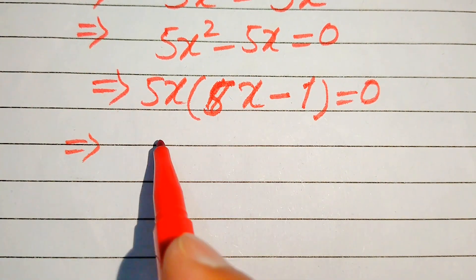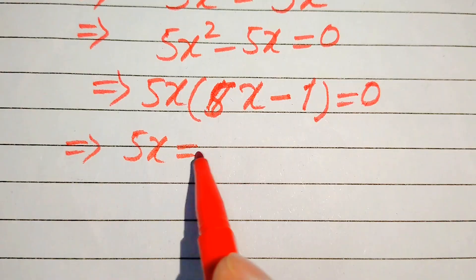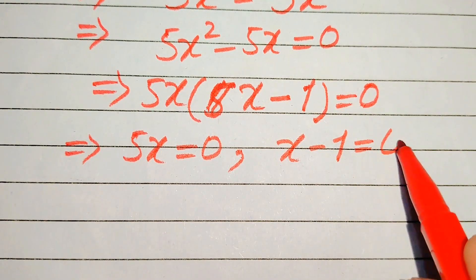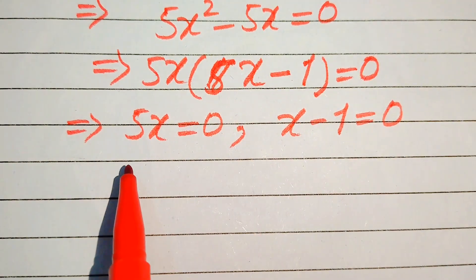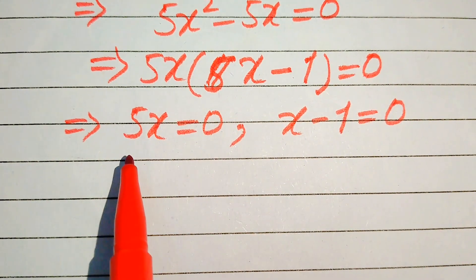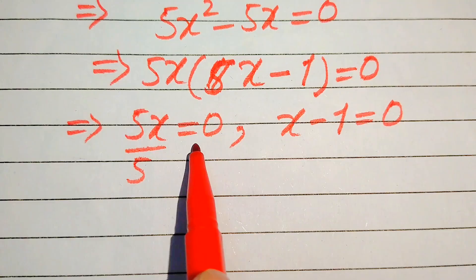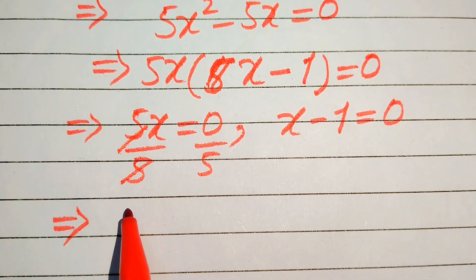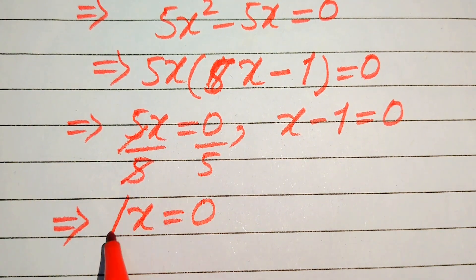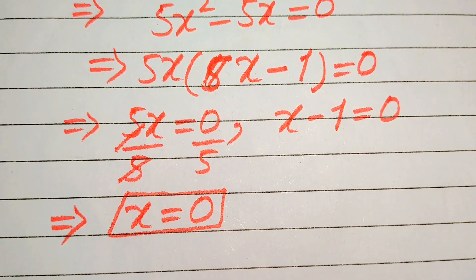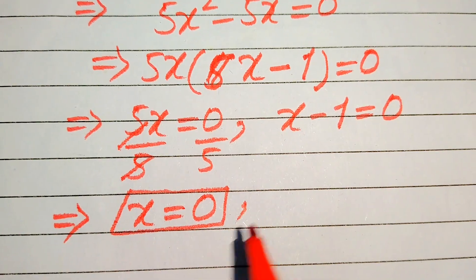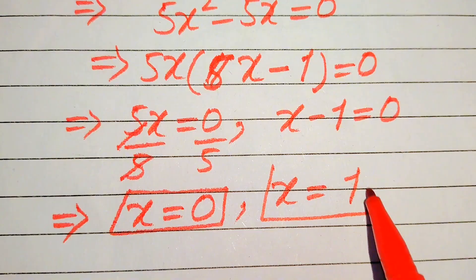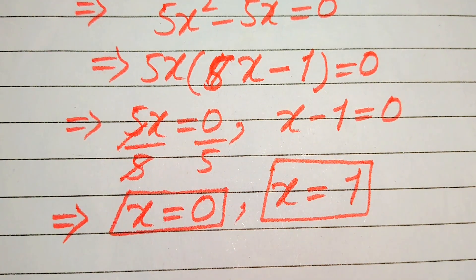Now we divide this equation into two cases. The first case: 5x equals 0, and the second case: x minus 1 equals 0. In order to find the values of x from the first case, we divide both sides by 5, the 5s cancel out, and we get x equals 0. This is the first root of the given equation. From the second case we easily get x equals 1, and this is the second root of the given equation.